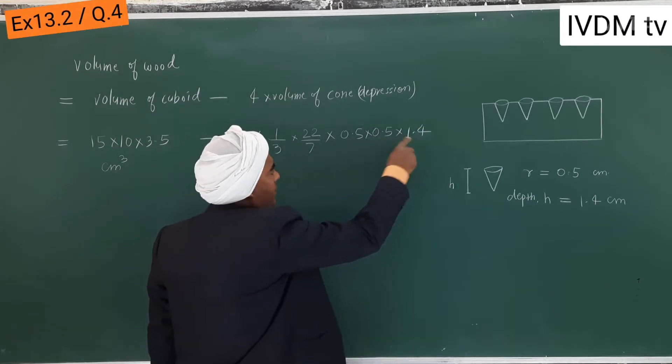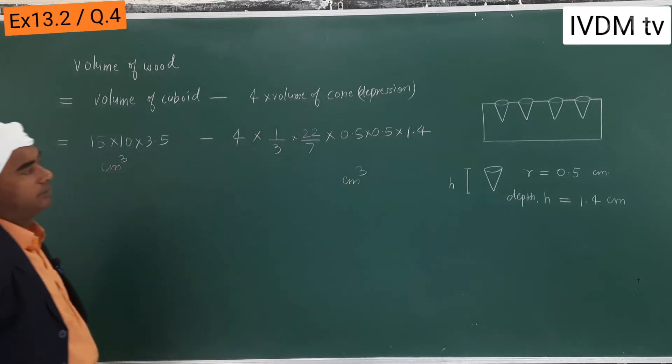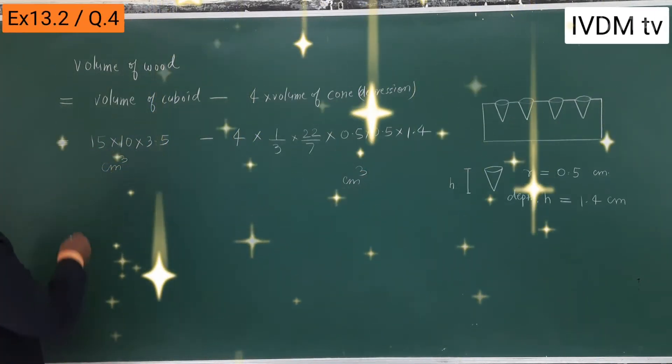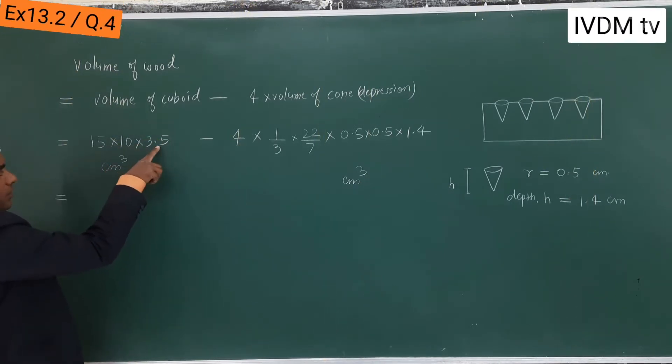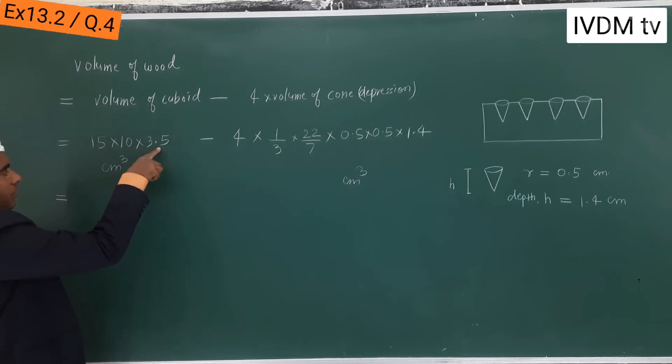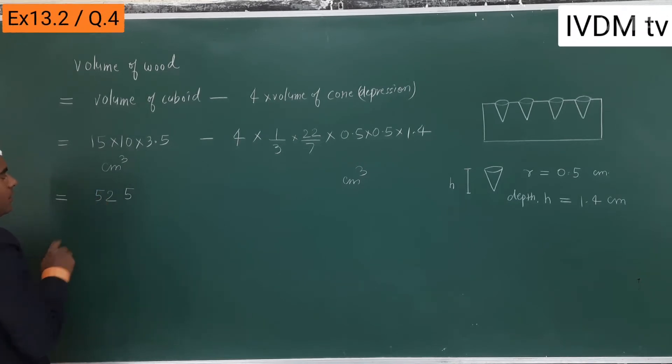So now solve. This is 10 into 3.5, so decimal will be removed. 15 into 35, this is 525 minus...